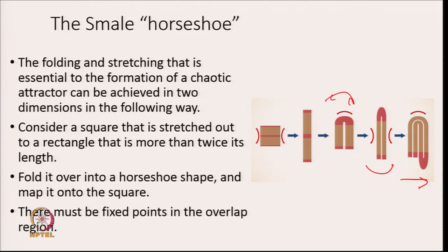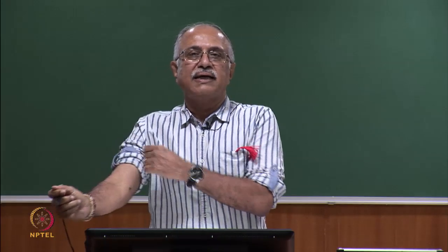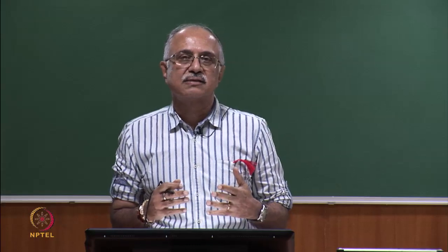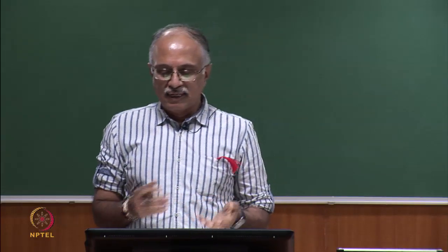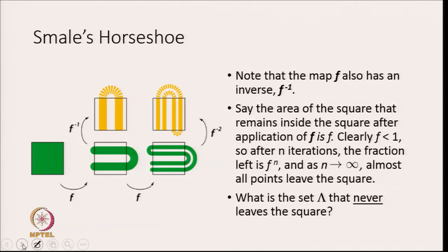We ask for the overlap between the original square and the horseshoe, and then keep doing that over and over again. You take the original square, elongate it, shrink it in one dimension, turn it around, and put it back. It is interesting to ask whether there are any fixed points — any points that remain inside the square after this operation — and clearly because this is a map onto itself, there must be a fixed point somewhere. After applying f again, this is pulled out twice, turned around, and you can see the action of the mapping applied twice.